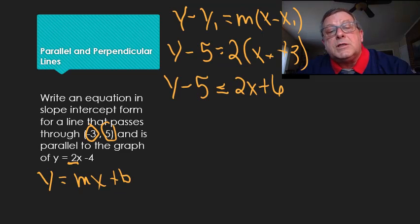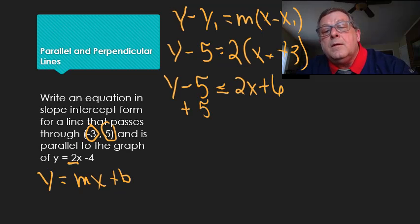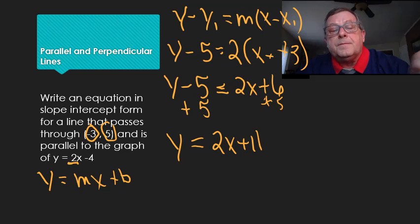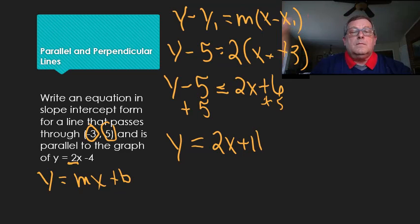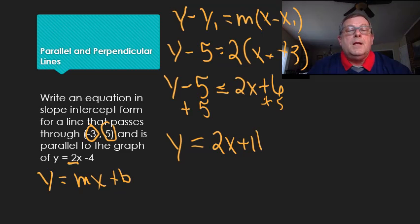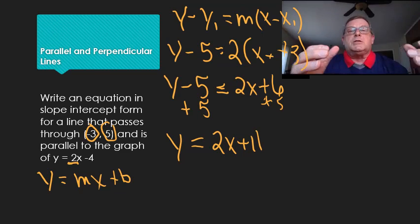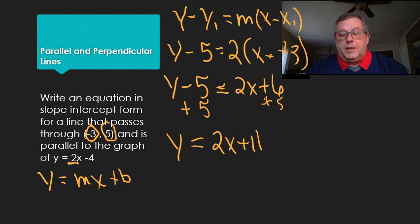Now I'm going to add 5 to both sides, and I get y equals 2x plus 11. I've written an equation in slope-intercept form for a line that passes through negative 3, 5, and is parallel to the line 2x minus 4. Parallel lines have the same slope — I used point-slope and solved to slope-intercept.